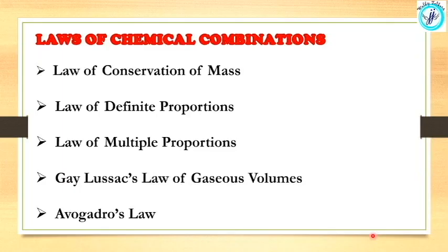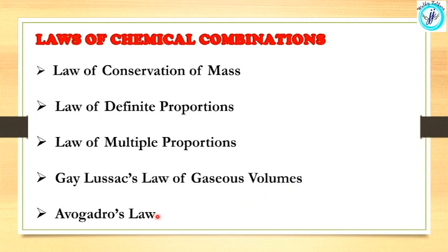This is the law of chemical combinations. There are 5 laws: 1 — law of conservation of mass; 2 — law of definite proportions; 3 — law of multiple proportions; 4 — law of gaseous volumes; 5 — Avogadro's law.